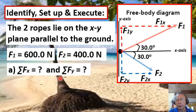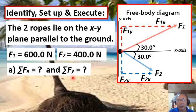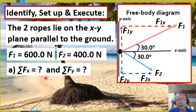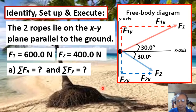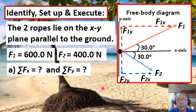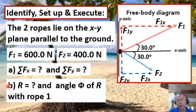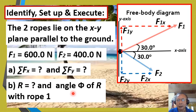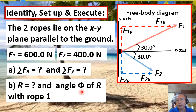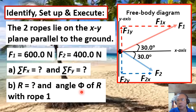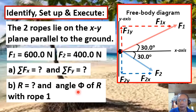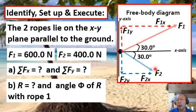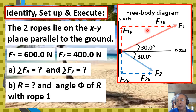Our target variable for question A is the summation of Fx and the summation of Fy — in other words, we're going to determine the x and y components of the net force. For question B, we are asked to determine the magnitude of the resultant force, denoted by R, and the angle it makes with the rope of Logger 1, denoted by angle theta. The x and y components of the two forces are represented in the diagram by broken arrows.